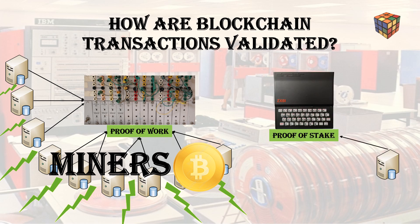That led to another model called proof of stake. Rather than using tons of electricity in a competition to solve equations, the computer with the most coins gets to solve the problem. The more coins you own of a virtual currency, the more likely you are to be chosen to validate the blocks and add them to the blockchain. After you submit the block to the network for approval, someone else will get a chance to assemble the next block, so you won't get to create a new block again for a period of time. The proof of work method hands out block rewards as virtual coins, whereas the proof of stake model rewards individuals with the transaction fees paid by the users of the block being verified.